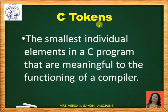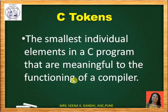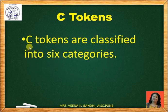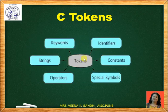C tokens. The smallest individual element or entity in a C program that are meaningful to the C compiler are known as C tokens. C tokens are the main building block for constructing the C program. C tokens are classified into six types: keywords, identifiers, constant, special symbols, operators, and strings.